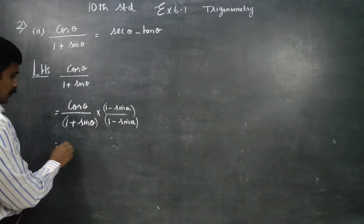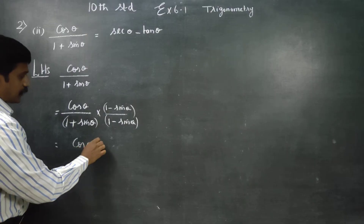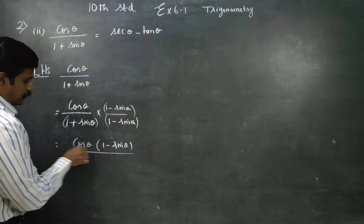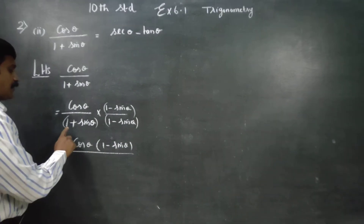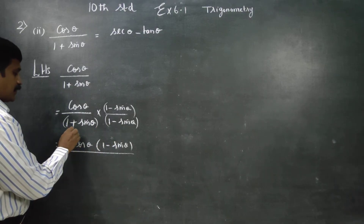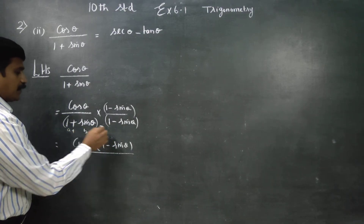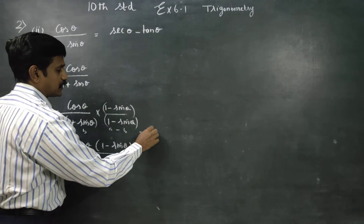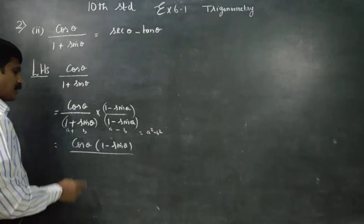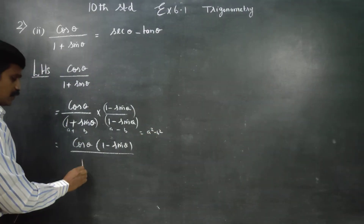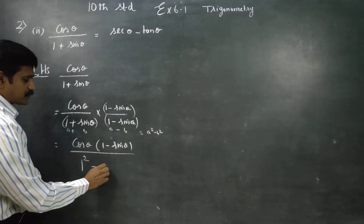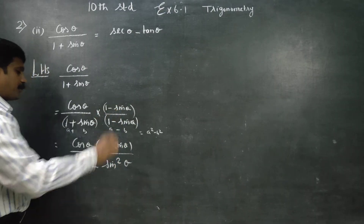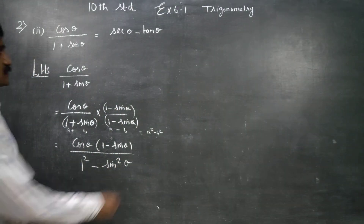On top we have cos θ, and it will be multiplied by (1 - sin θ). On the denominator, we use the algebra form: (a + b)(a - b) = a² - b². So the denominator becomes 1² minus sin² θ, which is 1 - sin² θ.